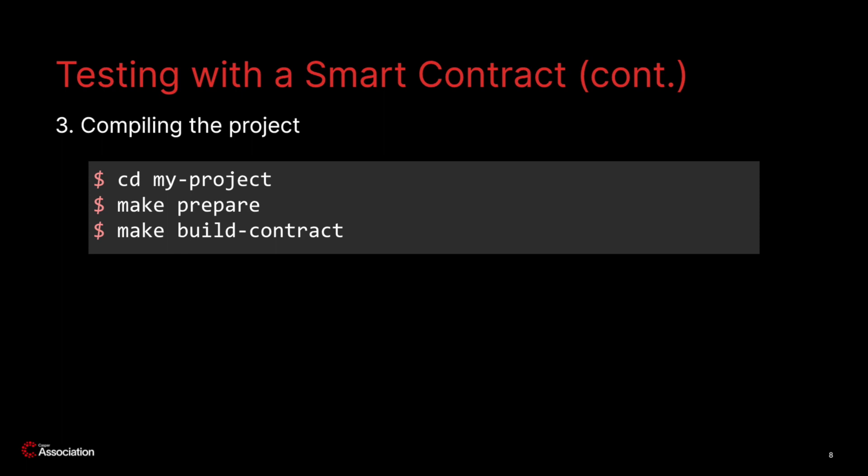Now that we have Rust set up, we have to compile the sample contract into WebAssembly. Notice that we build the contract using the release option. You should always build contracts in release mode because a debug build will produce a much larger contract that is more expensive to execute on the blockchain, which means higher gas prices. Once compiled, inside the contract folder you will see a target folder containing the compiled smart contract named contract.wasm.